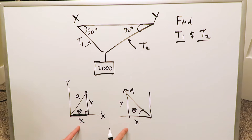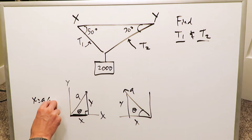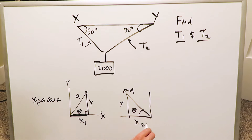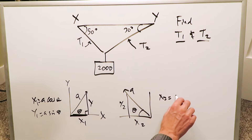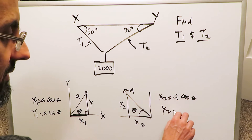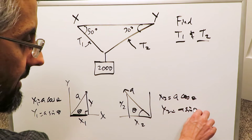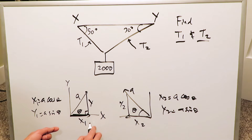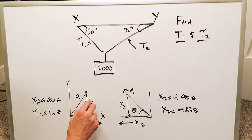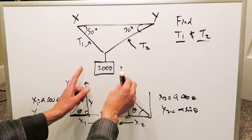In this instance, the x-components are opposing each other. x1 equals a cosine theta and x2 equals a cosine theta, but x1 is in one direction and x2 is in the opposing direction. Meanwhile, y1 equals a sine theta and y2 equals a sine theta — the y-components are in the same direction; they are collinear.